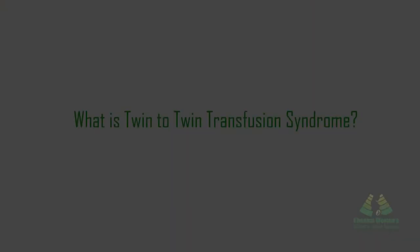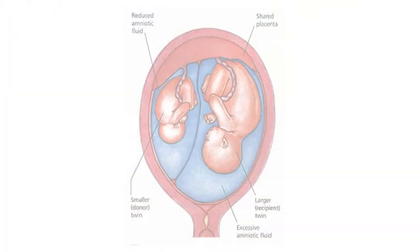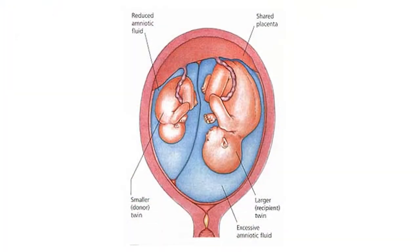Twin-to-twin transfusion syndrome (TTTS) can affect identical twins who share a common placenta — these are called monochorionic twins. TTTS happens when there is an imbalance in the placental blood vessels that connect both twins.